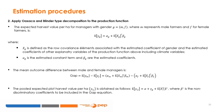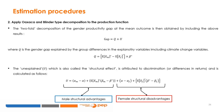The Oaxaca and Blinder type decomposition is applied to the production function. The two-fold decomposition of the gender productivity gap at the mean outcome is obtained, where Gap equals Q plus U. Q is the gender gap explained by the group differences in the explanatory variables including climate change variables. The unexplained component U, also called the structural effect, is attributed to discrimination or differences in returns and can be broken down into two results.